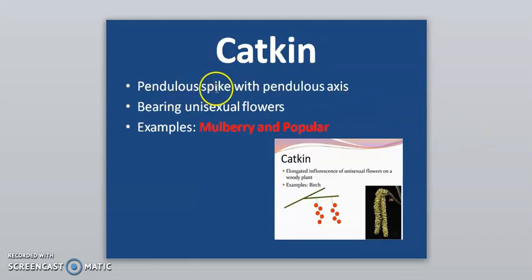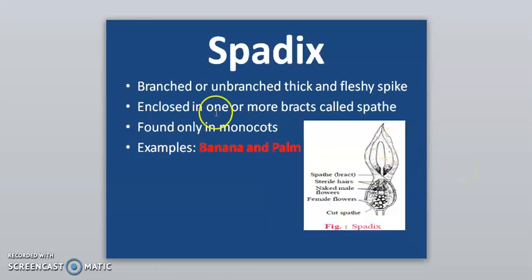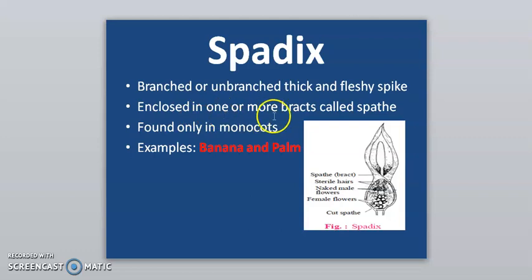Catkin is a pendulous spike with a pendulous axis bearing unisexual flowers — example is mulberry and Populus. Spadix is a branched or unbranched thick and fleshy spike, enclosed in one or more large bracts called spathes, found only in monocots — example is banana and palm.